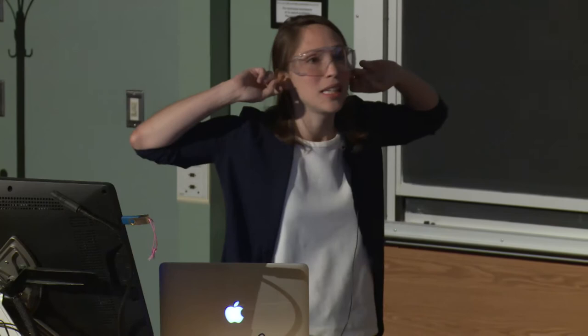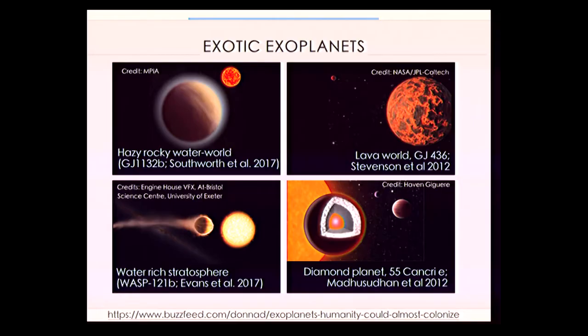We're now in a new era where we don't even have to imagine what's out there — nature is providing many awesome examples. These are press release images from exoplanet discoveries in the last five years, many from the Kepler mission. We have a hazy rocky water world, a world where the surface is so hot the ground is lava. These are artists' recreations of what these worlds should look like given what we know about them.